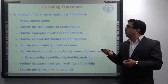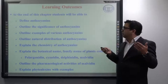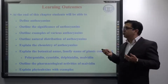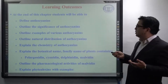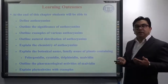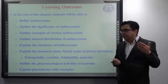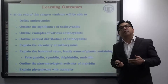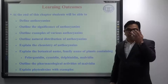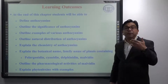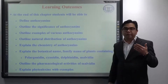This lecture we will be discussing Part 2 of anthocyanins. So far, talking about the learning outcomes, we have discussed the definition and significance of anthocyanins, seen certain examples, natural distribution of anthocyanins, and started a little bit about the chemistry of anthocyanins in the previous lecture. This lecture we will continue with anthocyanin chemistry, mainly discussing their stability, which is a very important factor.